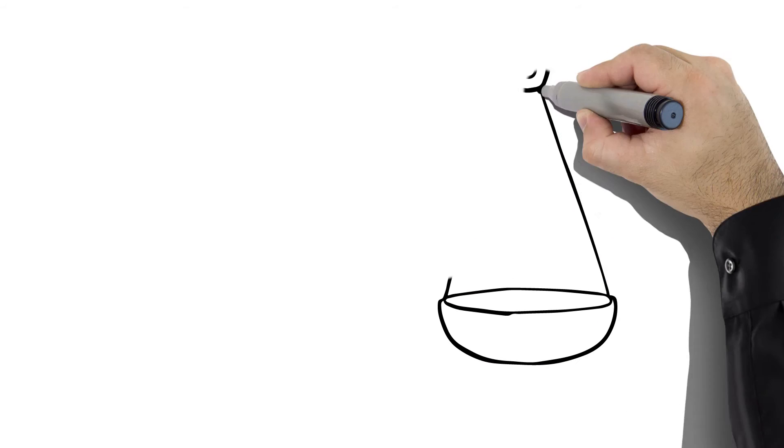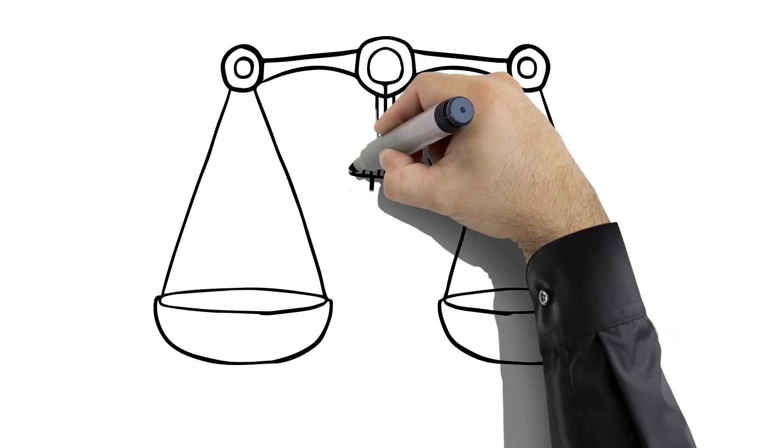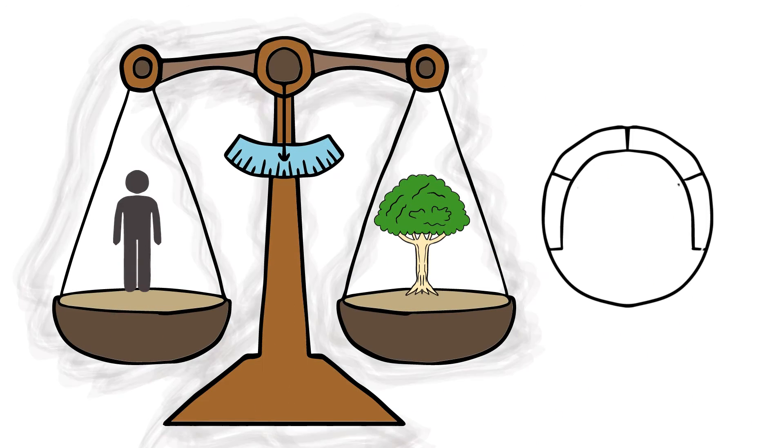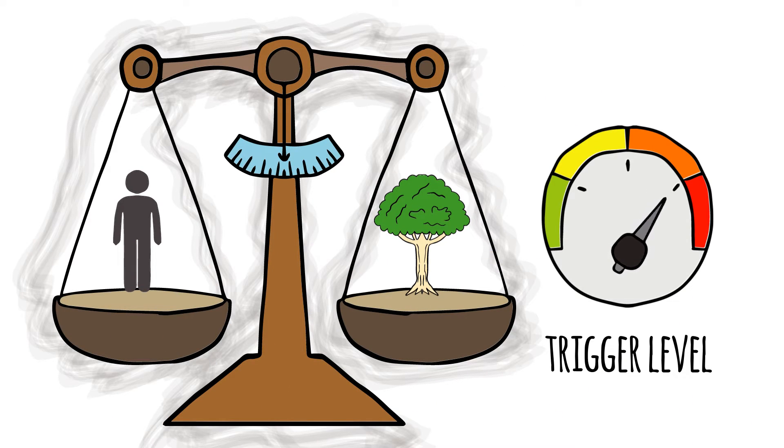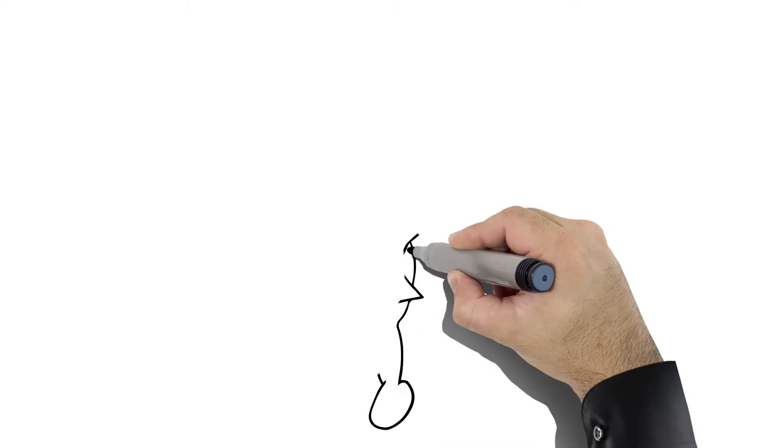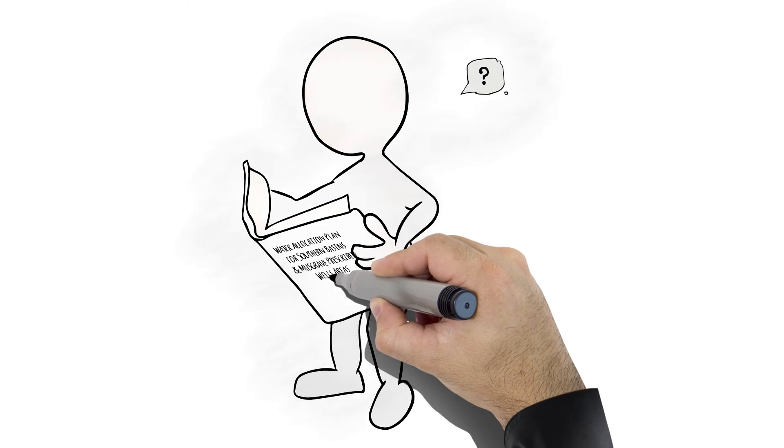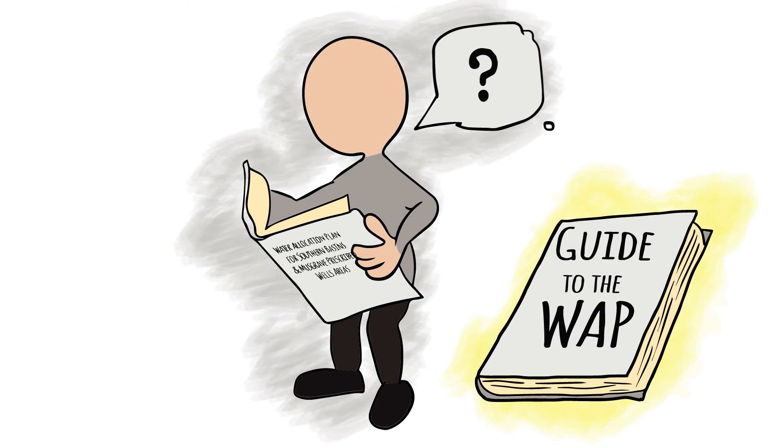The total volume of water that can be extracted is calculated each year according to trigger levels. These are key levels of storage that are needed to ensure the sustainability of the aquifer. A range of factors affect these trigger levels and an explanation of how this is calculated can be found in the Guide to the WAP on our website.